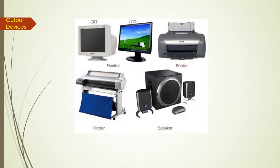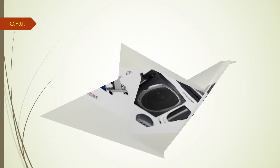The second one is the output unit. The output unit is the unit which helps us to produce results from our computer, either in soft copy or in hard copy. Examples of output devices are the monitor, speaker, printer, and pen drive.